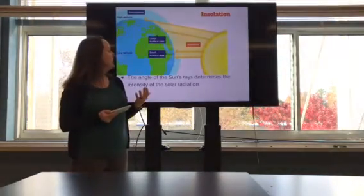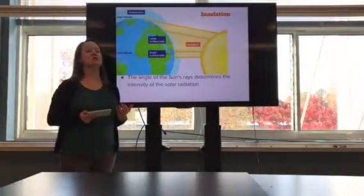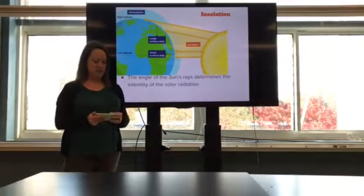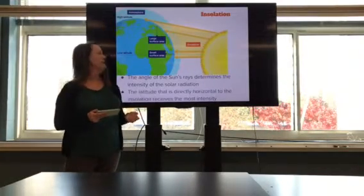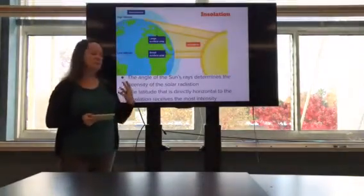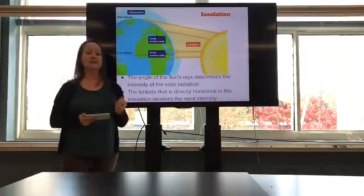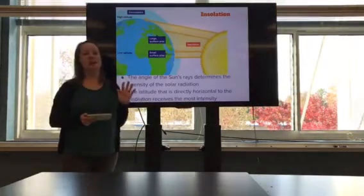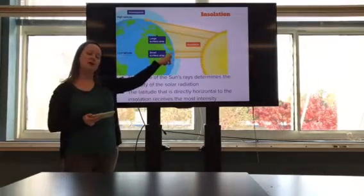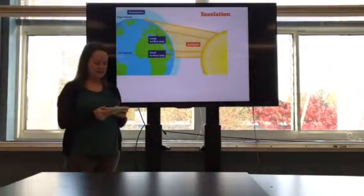All right, so the angle of the sun's rays is what determines the intensity of solar radiation, which is why at the poles, we have less insolation than we do at the equator. And it's what is directly horizontal to the insolation or the solar radiation that receives the most intensity. So as seasons change, the amount of intensity actually is not the highest at the equator, but it depends on which hemisphere is tilted towards or away from the sun.